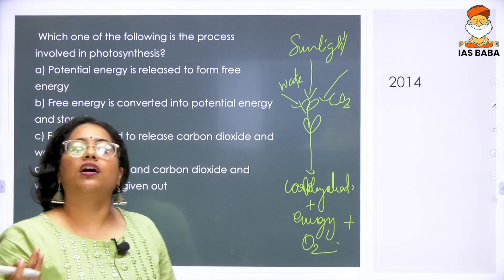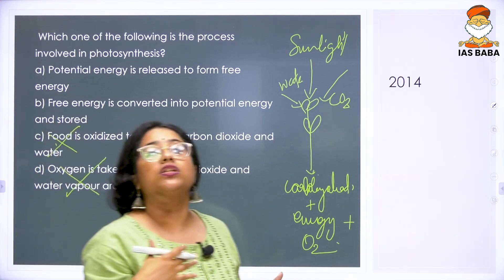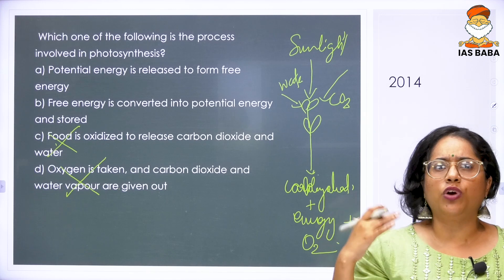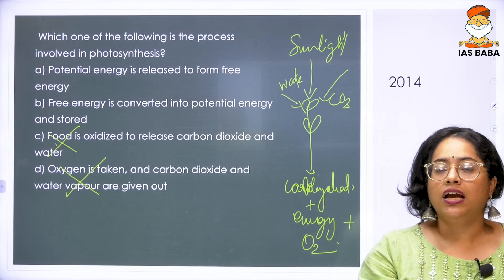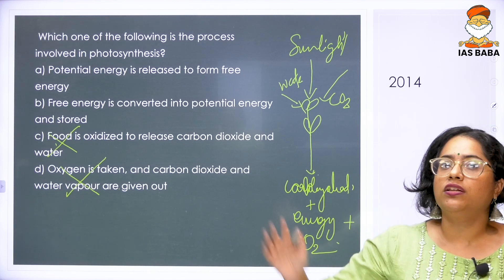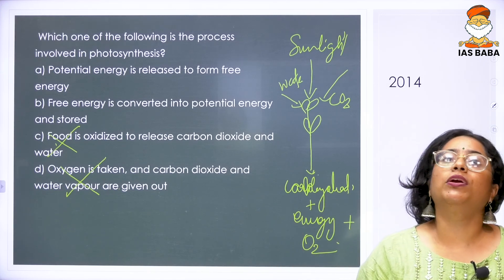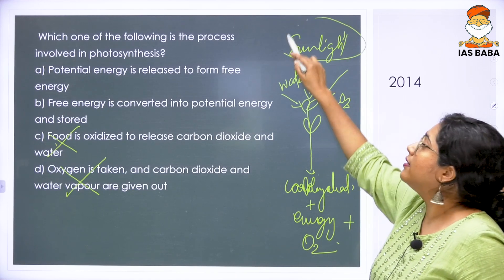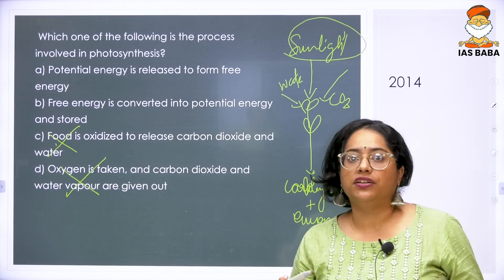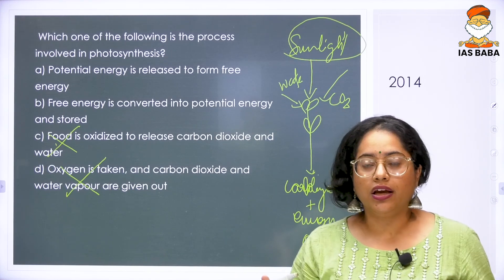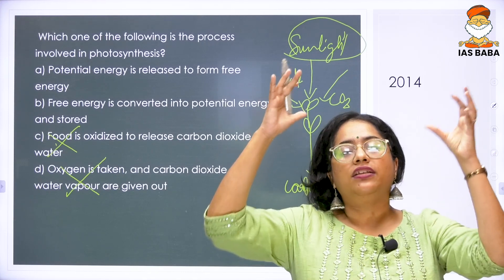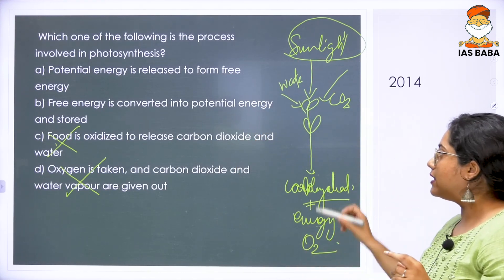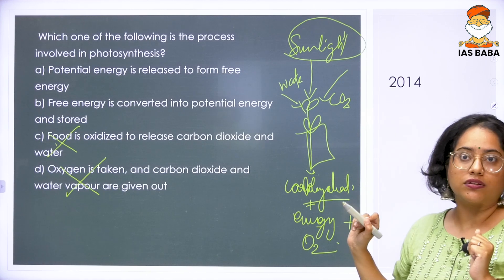What is taken in? Carbon dioxide is taken in, and oxygen and water vapor are given out. So the last two options are wrong. Coming to options A and B — what is sunlight? Sunlight is a form of free energy. Taking that free energy, it gets converted into carbohydrates and everything and stored in the plant.